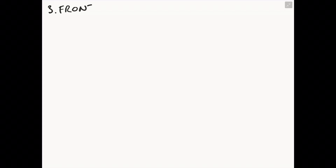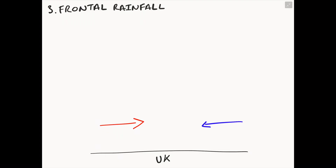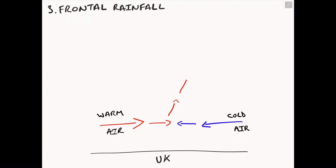Our third type of rainfall is called frontal rainfall. This is experienced a lot in mid-latitude locations, so we are going to use the United Kingdom in this particular example. It starts off with two air masses — warm air and cold air. Both of these air masses meet, and the cold air forces the warm air to rise, as warm air is less dense, and cold air is very dense and heavy.